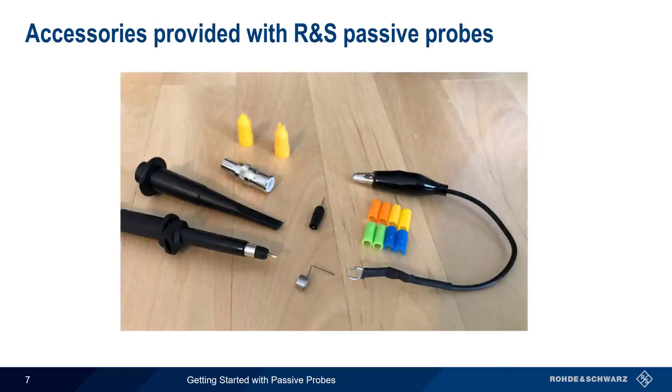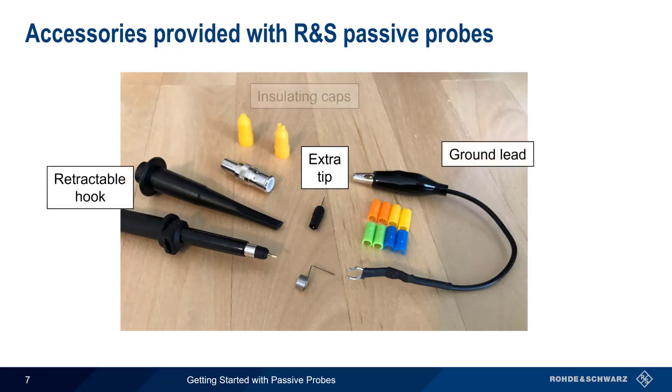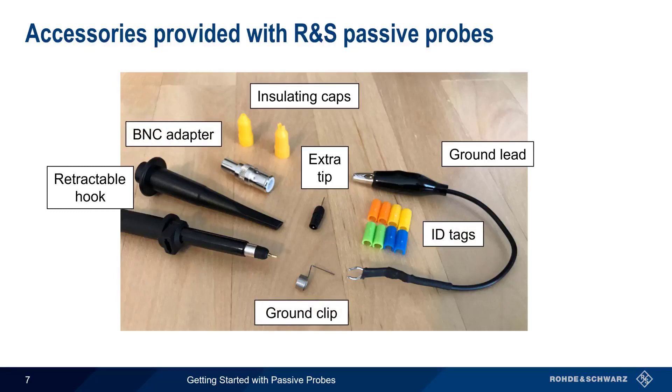Rohde & Schwarz passive probes are usually provided with a number of small accessories. These include an extra or spare tip, a ground lead, a retractable hook, insulating caps, a BNC adapter, a ground clip, and identification tags. We've already discussed the ground lead, but let's take a minute to go over some of the other common passive probe accessories.